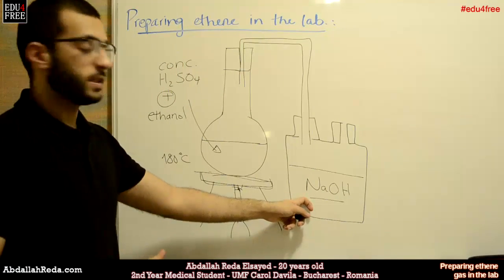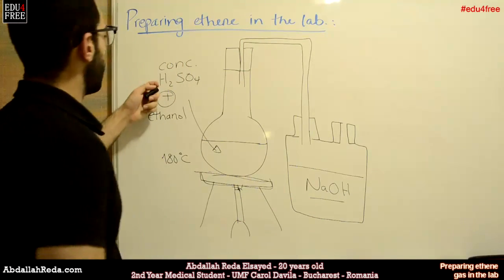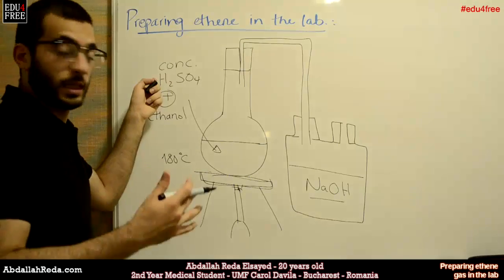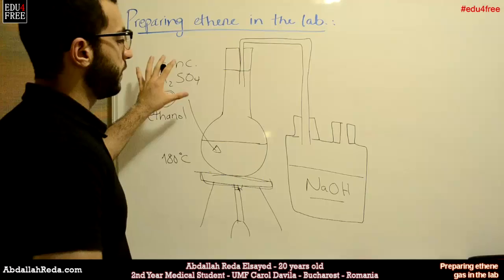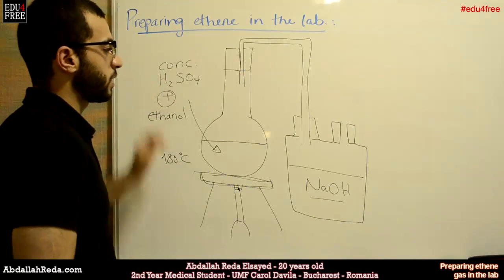Sodium hydroxide is very basic, and concentrated sulfuric acid is very acidic. This is added in order to neutralize the high acidity of this mixture.